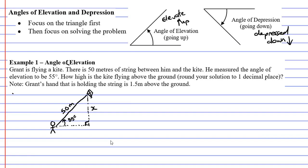There's a little note: Grant's hand that is holding the string is 1.5 meters above the ground. So this distance here is 1.5 meters, and this will come into play later. Let's focus on finding x.